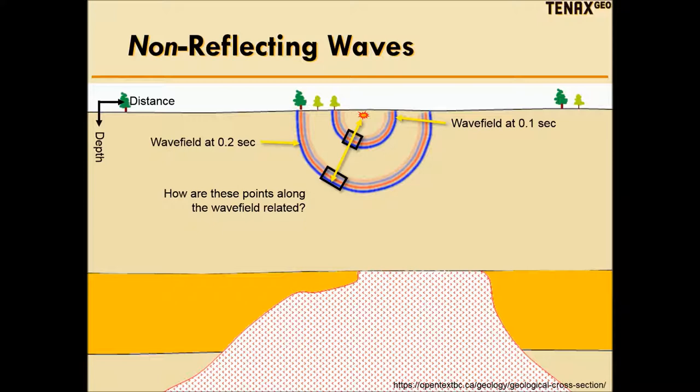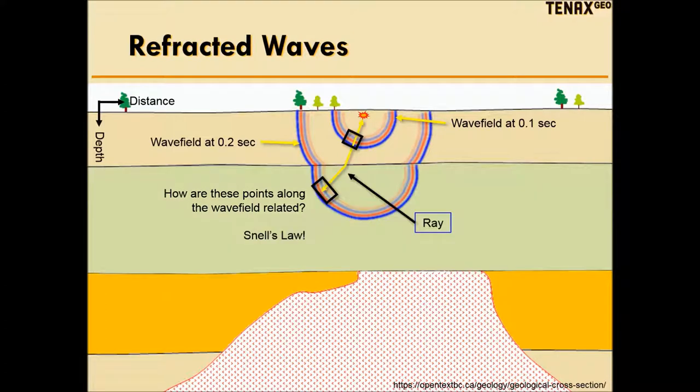What would happen if there wasn't a second layer? Instead, assume that the wave field stays within a 2,000 meter per second layer the whole time. The wave front would be spherical. Then it would be very easy to see how the wave field evolves as it propagates into the Earth. We can simply trace a perpendicular line from the wave front back to the source point.